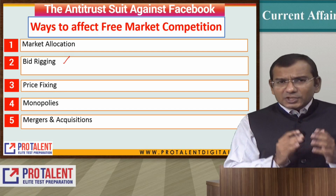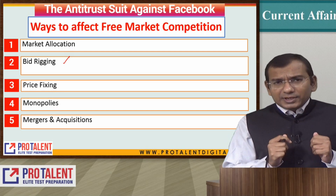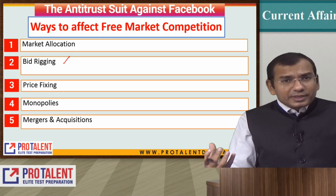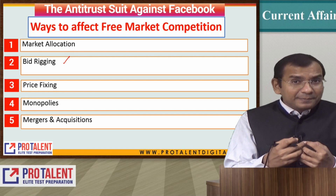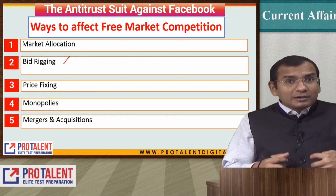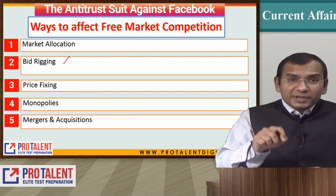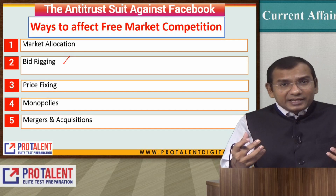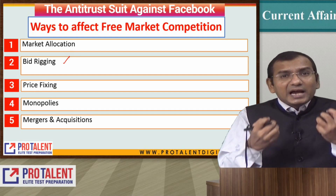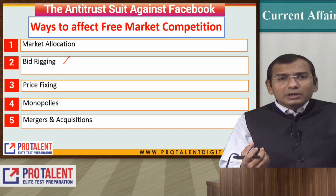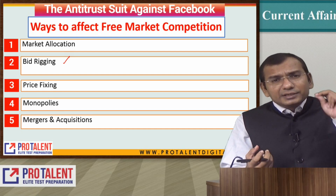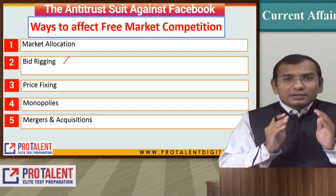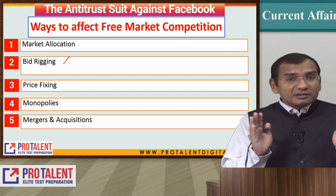The second method is bid rigging. When auctions happen, a few players come together and agree to allow one of them to win the bid — either by all providing a very low bid or a very high bid, depending on circumstances. This is called bid rigging. The third is price fixing. For example, internationally, there is an organization called OPEC — Oil Producing and Exporting Countries — which forms a cartel and fixes a price for oil.